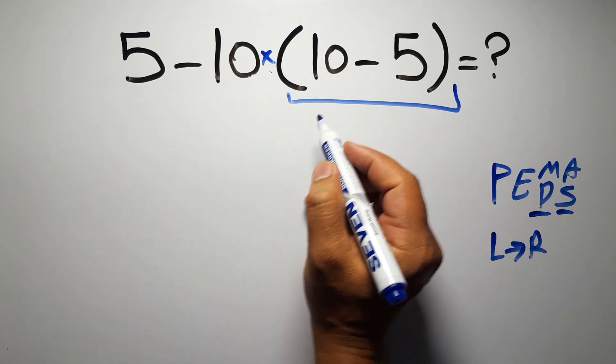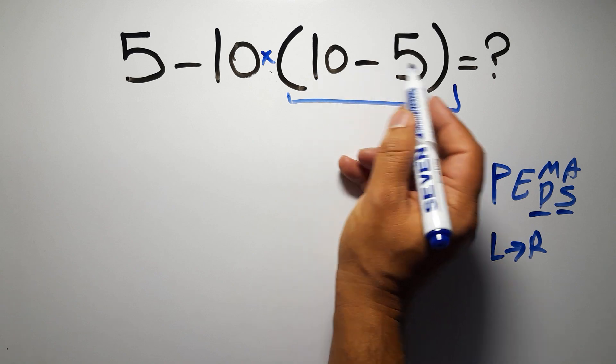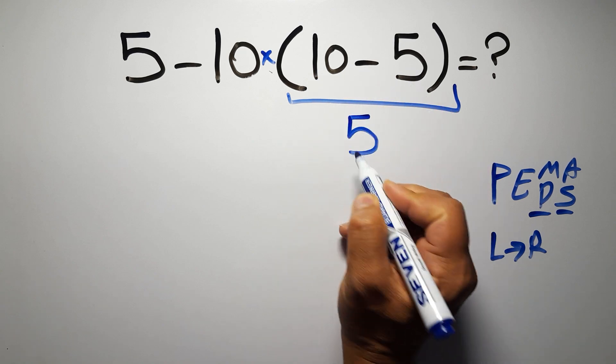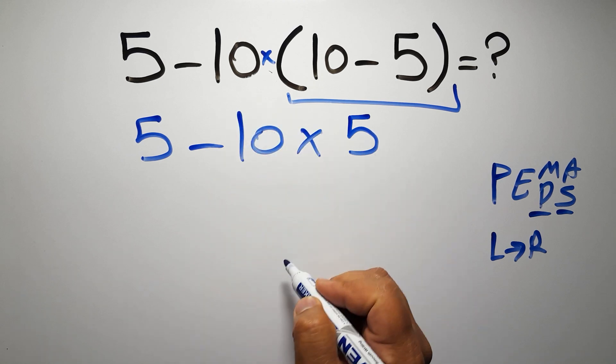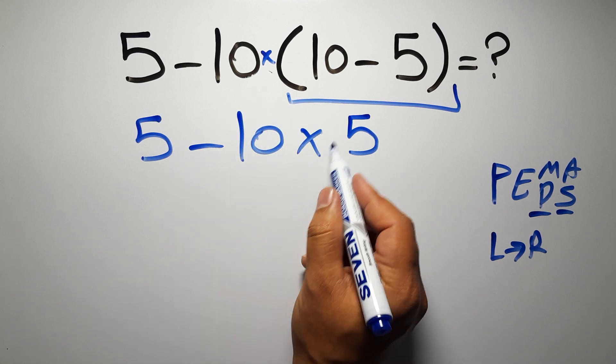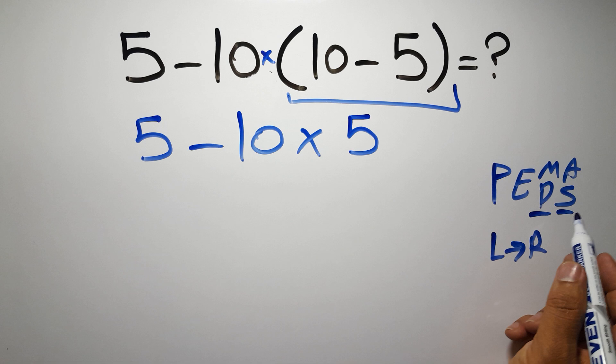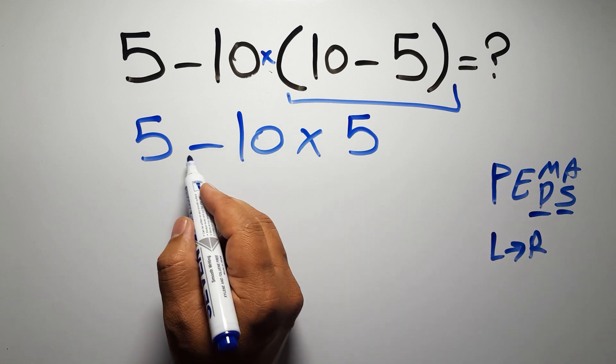So first this parentheses: inside these parentheses we have 10 minus 5 which gives us 5. So 5 minus 10 times 5. Now we have one subtraction and one multiplication. According to the PEMDAS, multiplication has higher priority than subtraction because multiplication comes before subtraction.